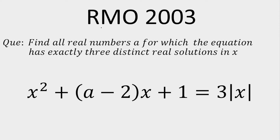Hello everyone. In today's lecture I am going to solve a Regional Mathematical Olympiad problem of the year 2003. The question is: find all real numbers A for which the equation has exactly three distinct real solutions in X. The equation is X squared plus (A minus 2) times X plus 1 is equal to 3 times mod of X.